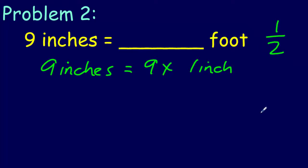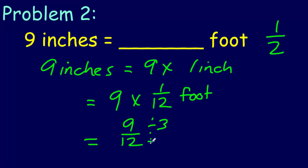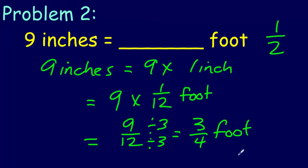Now let's go ahead and work out our problem. We have nine and we're going to multiply that by one twelfth — that's our conversion factor — so we have nine times one twelfth, which is nine copies of that. That can be rewritten as nine over 12. Since we have a common factor of three, dividing numerator and denominator by three gives us three fourths. Does that answer make sense? We said the result should be more than half a foot, and three quarters is a little bit more than a half. Cool.